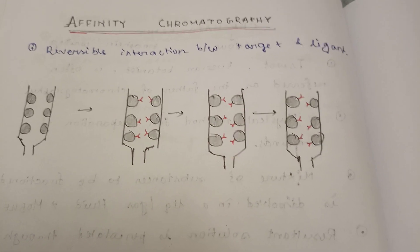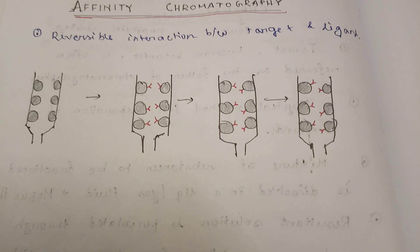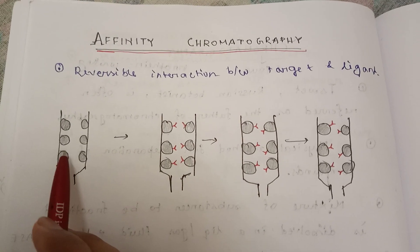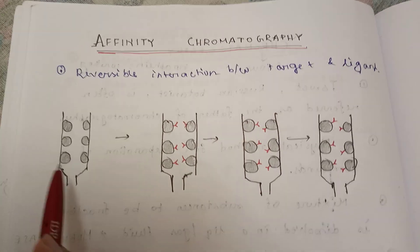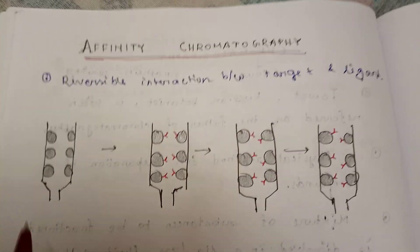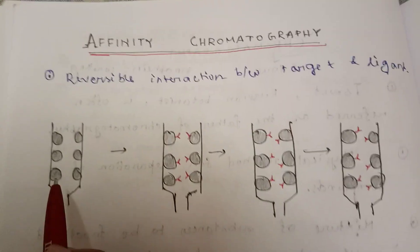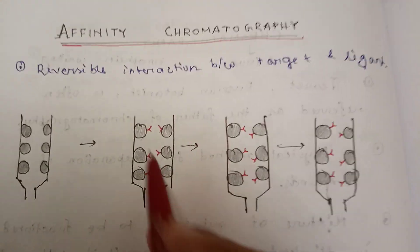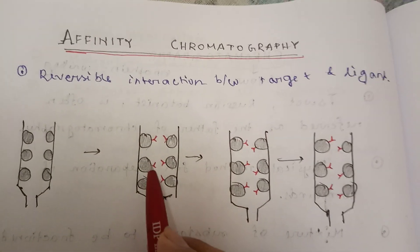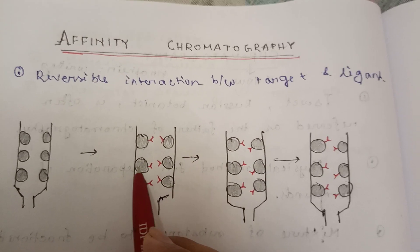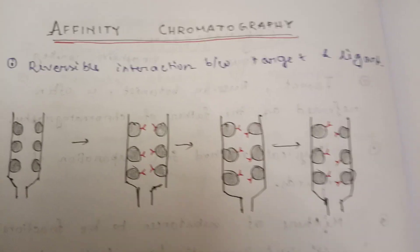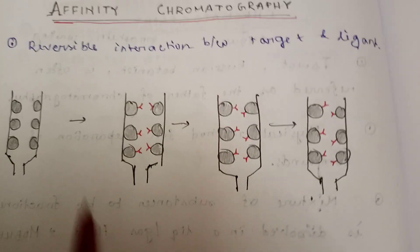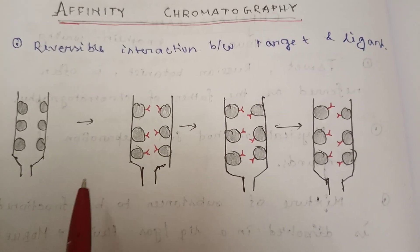Let's come to the drawing. Here you can see this is the column and this is the matrix. Antibody is attached somewhere to the matrix, and antibody will bind to only antigen. A specific antibody will bind to a specific antigen. So here we will load the sample — there will be many antigens.